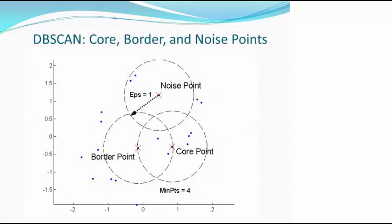To extend this concept, look at this example. That point is a core point because our minimum is four and we have five points here — so that's a core point. At this other point, if it's placed at the center, you only get three or four points, so it doesn't pass the threshold. However, there is a core point inside its circle, so this will be the border point. That one over there is the noise point. So the first step in cleanup is to remove the noise points because they are irrelevant.